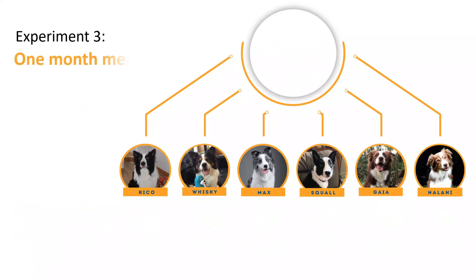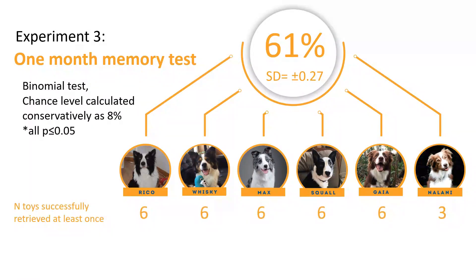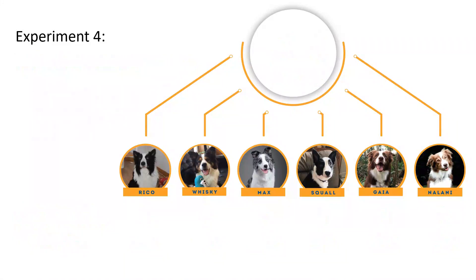In the 1 month memory test, the dogs have shown that they remember the names of the toys by retrieving the correct toy in 61% of the trials. The dogs also remembered the names of the toys after 2 months and retrieved the correct toy in 57% of the trials.